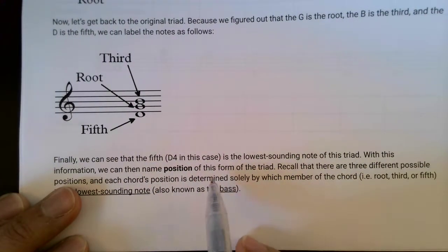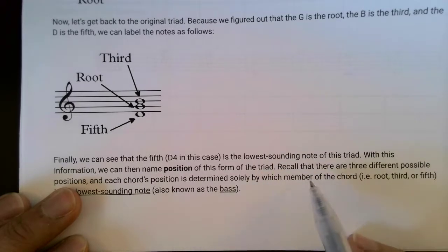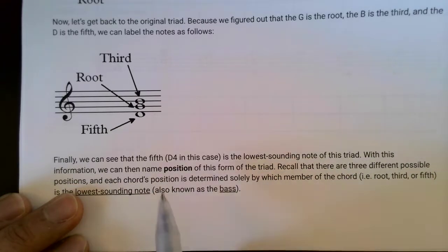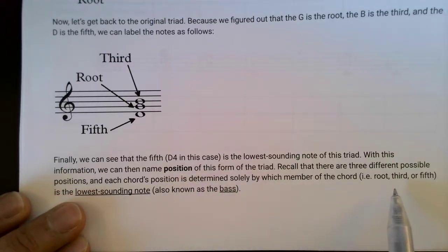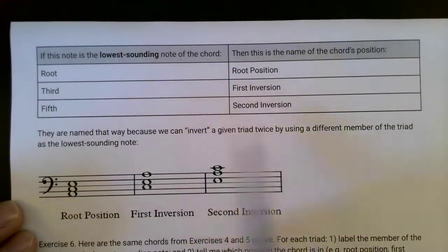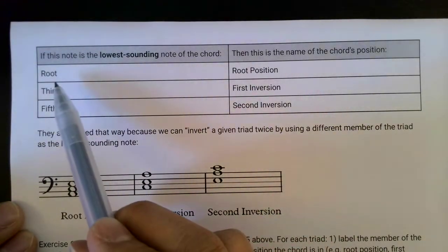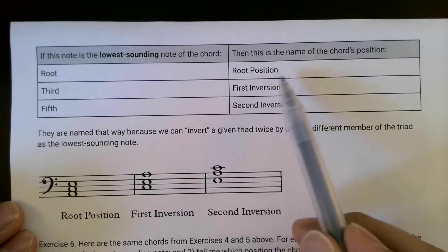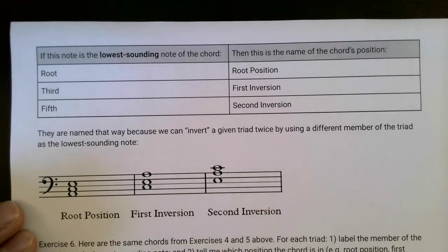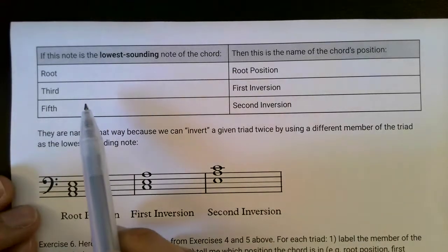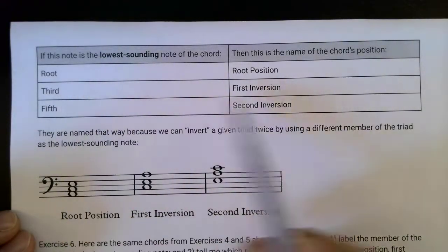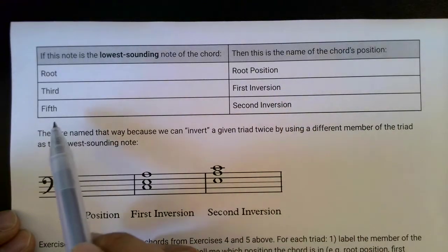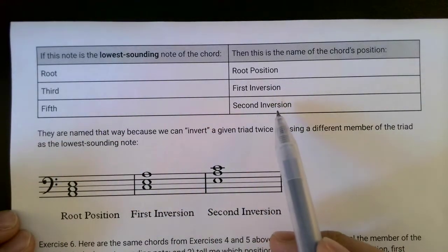With this information, we can name the position of this form of the triad. Recall that there are three different possible positions, and each chord's position is determined solely by which member of the chord — the root, third, or fifth — is the lowest sounding note, also known as the bass. In the last page of this PDF, there's a chart. If the lowest sounding note is the root, the position's name is root position. If the lowest sounding note is the third of the chord, we call it first inversion. If the lowest sounding note is the fifth of the chord, we call it second inversion.